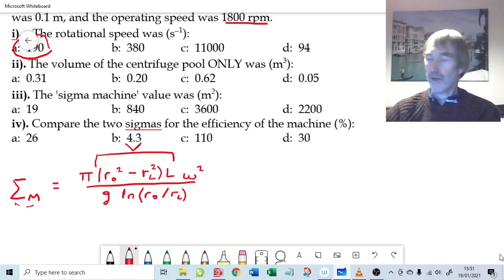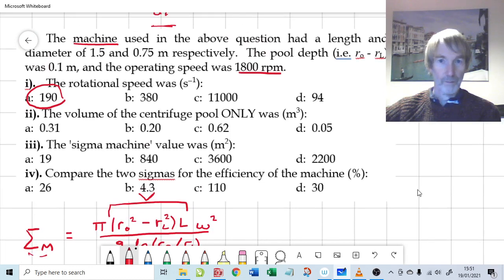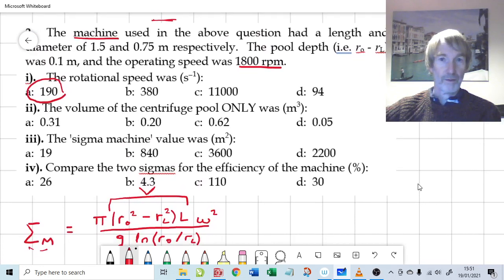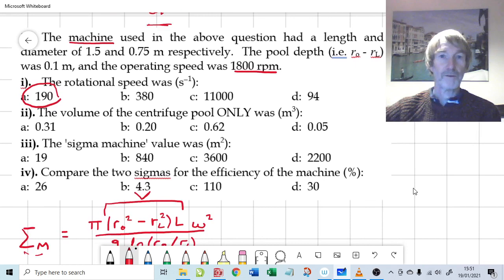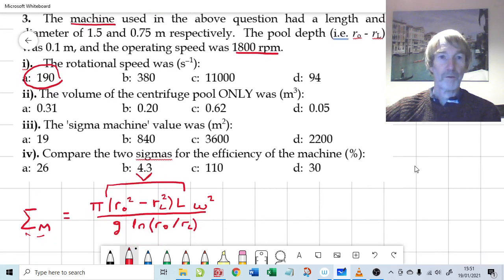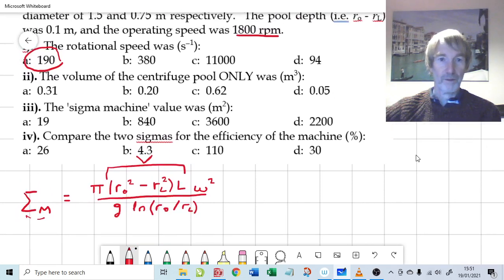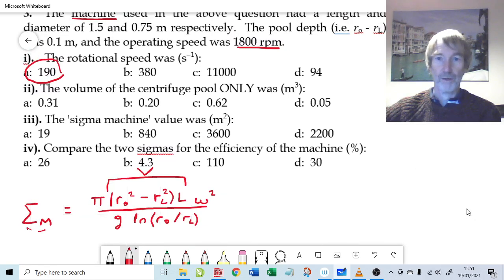In other words, we need R0 squared minus R the inner radius squared, times by the length. So the outer radius of the centrifuge, length and diameter. The diameter is 0.75 and the pool depth is 0.1. The diameter is 0.75 of a meter, that's the important thing, that means the outer radius is going to be half that. So the volume of the pool is going to be...